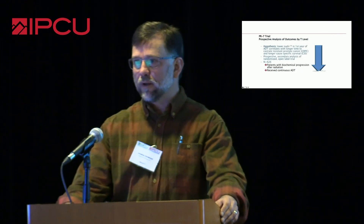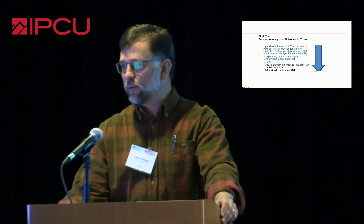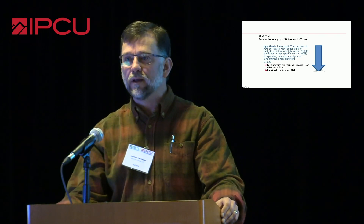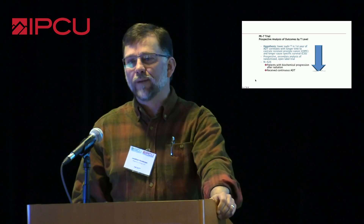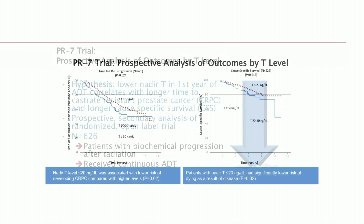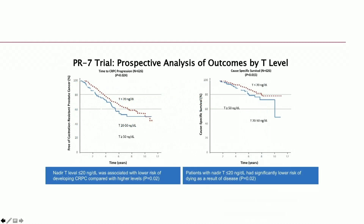Dr. Klotz and his team had the PR7 trial, where they had a hypothesis that lower nadir levels of testosterone in the first year of ADT will correlate with a longer time to castration resistance as well as an increase in cause-specific survival. They looked prospectively at 626 patients after biochemical recurrence after radiation who received continuous ADT. What they found is that both endpoints were exactly as suspected — an increased time to castration resistance as well as an increase in cause-specific survival in the group where testosterone was less than 20. Very provingly demonstrated.